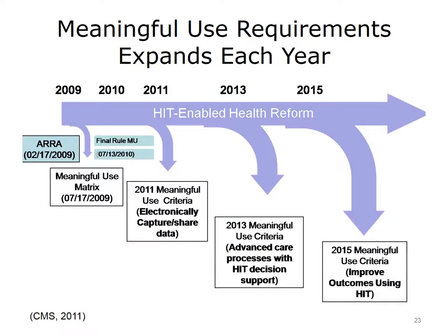Meaningful Use, MU, has evolved since the beginning of the program. Originally, the criteria outlined both a core set and a menu set of objectives for eligible professionals, eligible hospitals, and CAHs. For 2016, eligible professionals must meet 10 objectives and eligible hospitals and critical access hospitals must meet 9 objectives. Each year, Meaningful Use objectives expand on their previous version, focusing on the aims and priorities of the National Quality Strategy. Initial focus during Stage 1 was electronic capture and sharing of data. Stage 2 criteria encouraged the use of health IT for continuous quality improvement at the point of care and the exchange of information in a structured format. For 2015 and beyond, the focus continues with data capture and structured format, while adding an additional focus of improving outcomes using health IT.